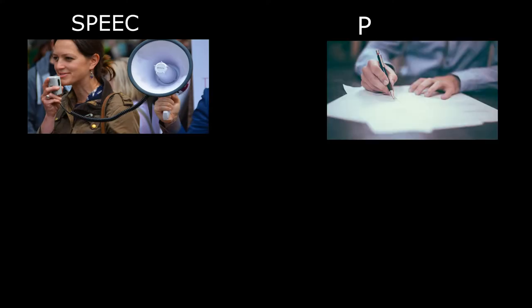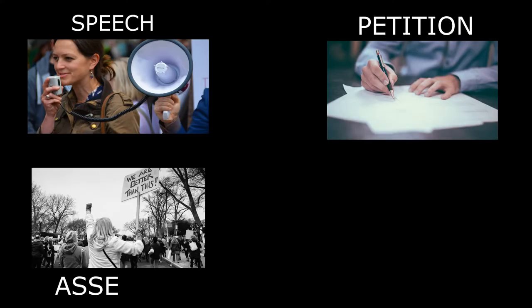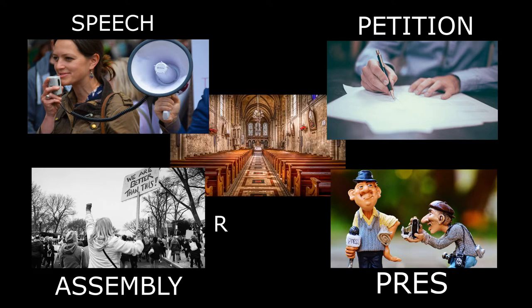Amendment 1: The First Amendment guarantees the freedom of speech, petition, assembly, press, and religion. The federal government cannot favor one religion over another or discriminate against any religion. Thomas Jefferson wrote about the necessity of a separation between church and state. The Supreme Court eventually ruled that individual rights could not present a clear and present danger to anyone else.